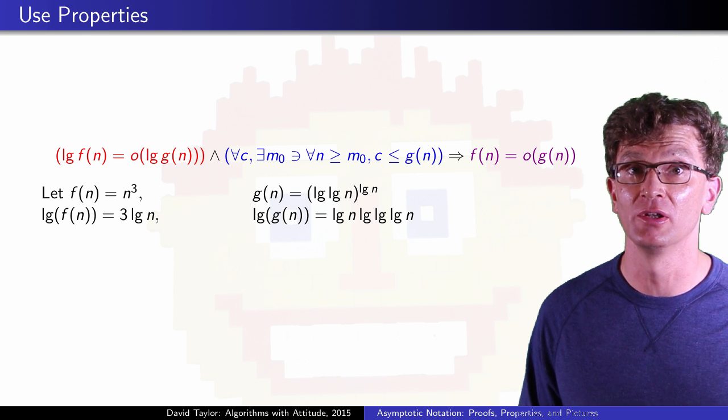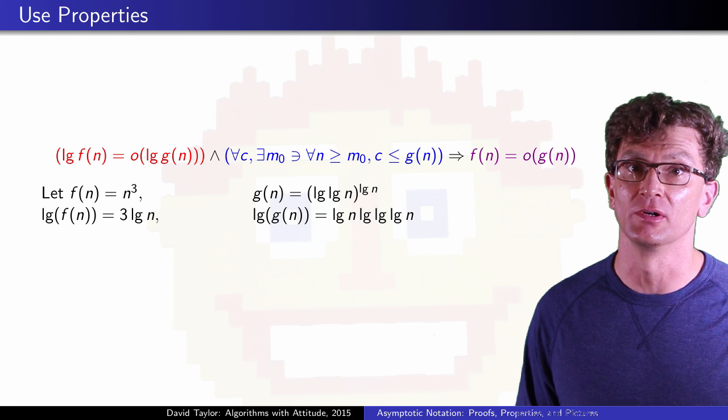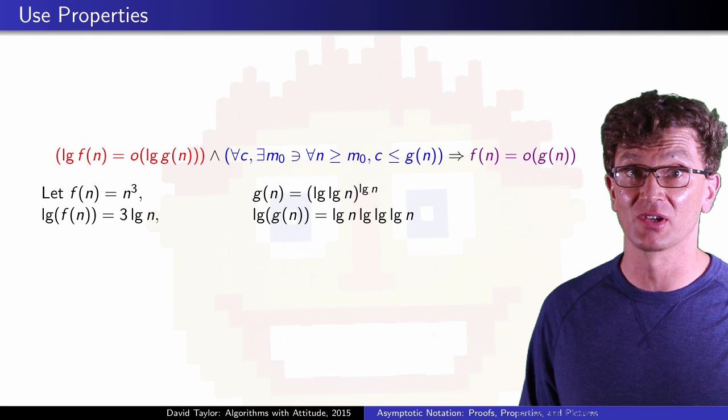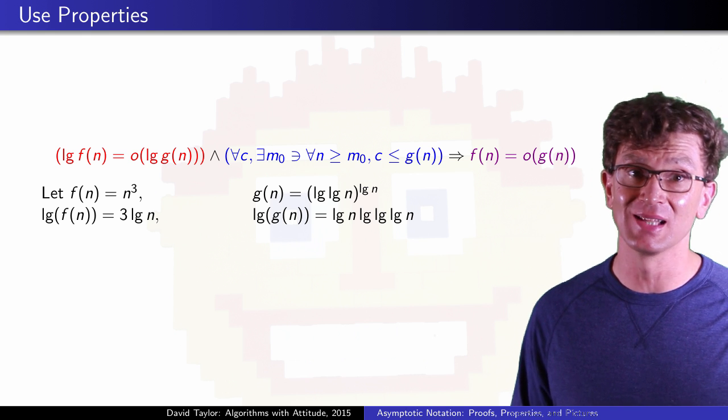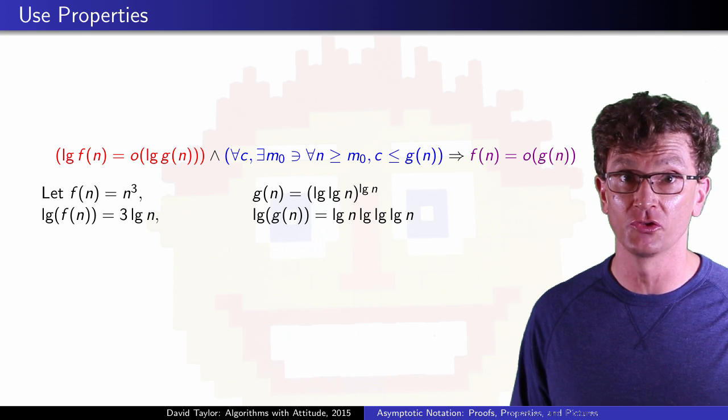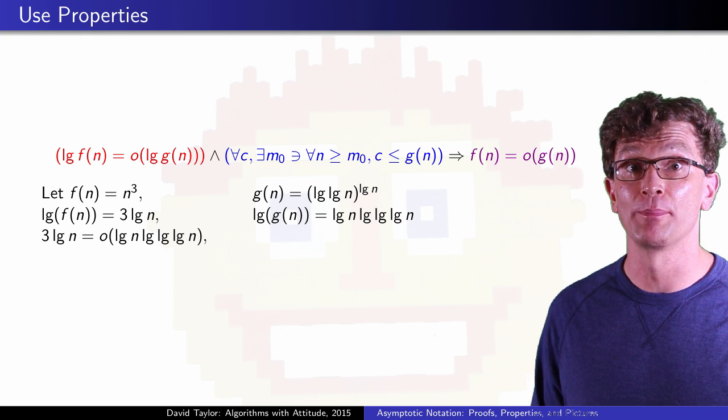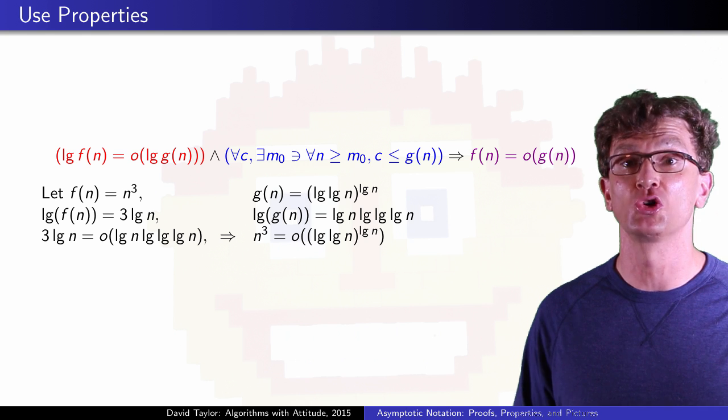Taking the log of each function, suddenly things are much easier. They each have a log n term, but while 3 is a constant, we know that log log log n grows, slowly, to infinity. The given part of our property holds, so we can just jump to its conclusion.